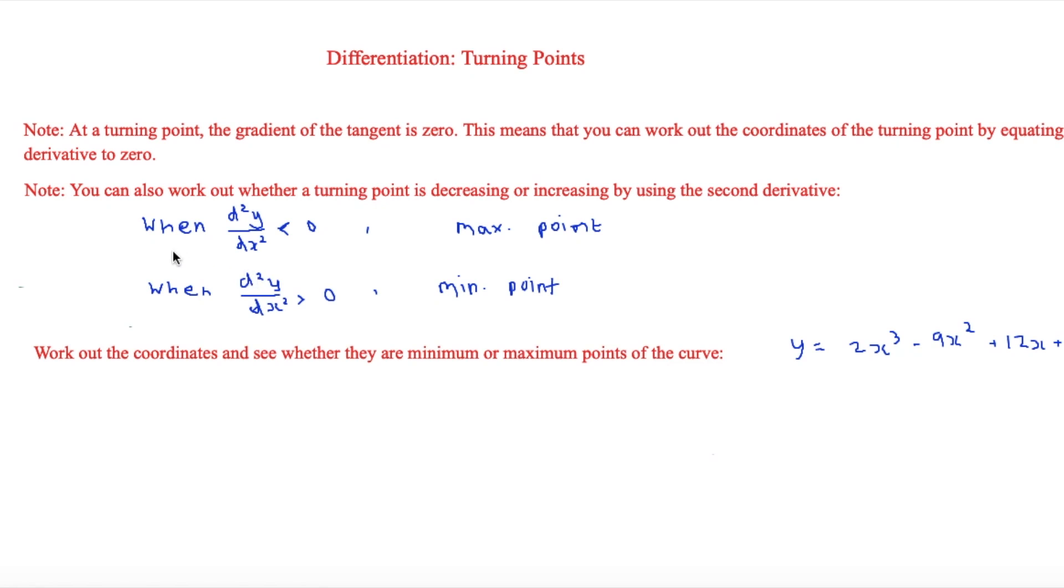You can also work out whether a turning point is decreasing or increasing by using the second derivative. When the second derivative d²y/dx² is less than zero, this means that it's a maximum point. But when d²y/dx² is more than zero, it means that it's a minimum point.